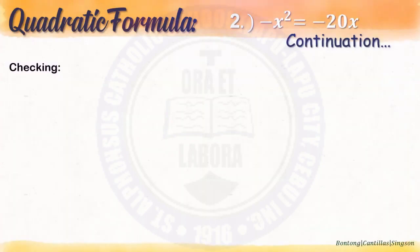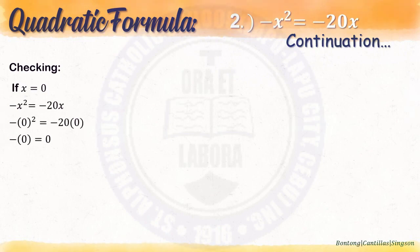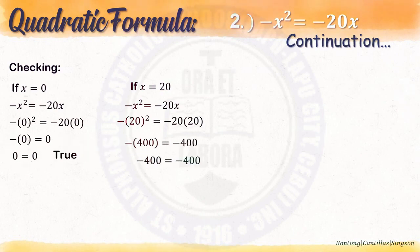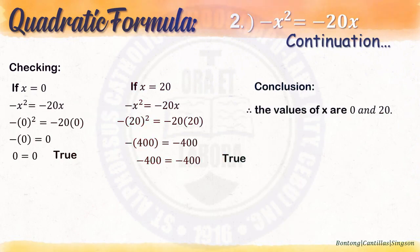Checking: if x is 0, write the given, substitute the value, simplify using PEMDAS — it is true. If x is 20, write the given, substitute the value of 20, simplify — that is also true. Conclusion: therefore, the values of x are 0 and 20.